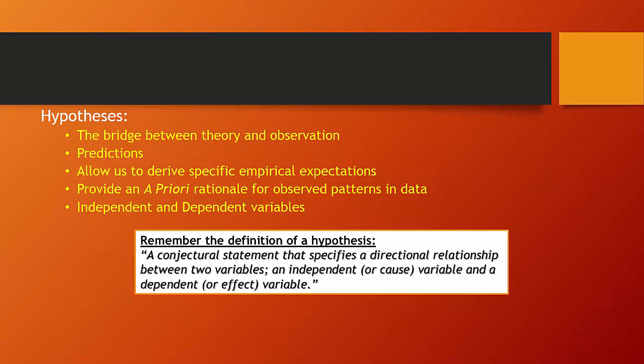Hypotheses provide an a priori rationale for relationships. If we've hypothesized in advance that A and B are related, we can have much more confidence in the observed relationship than if we just happened upon it. A hypothesis is a conjectural statement that specifies a directional relationship between two variables — an independent or cause variable, and a dependent or effect variable.